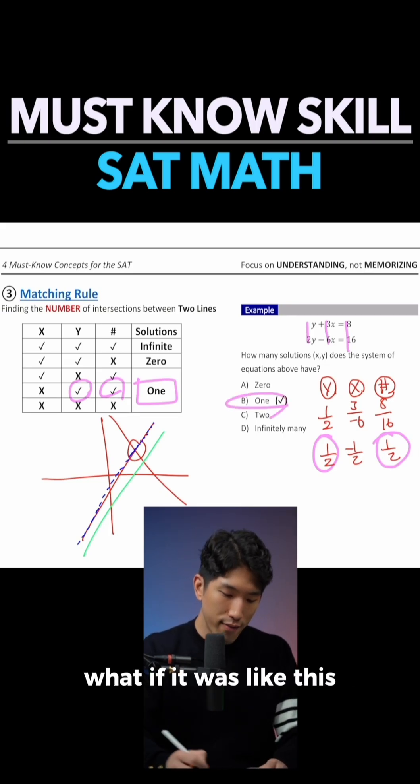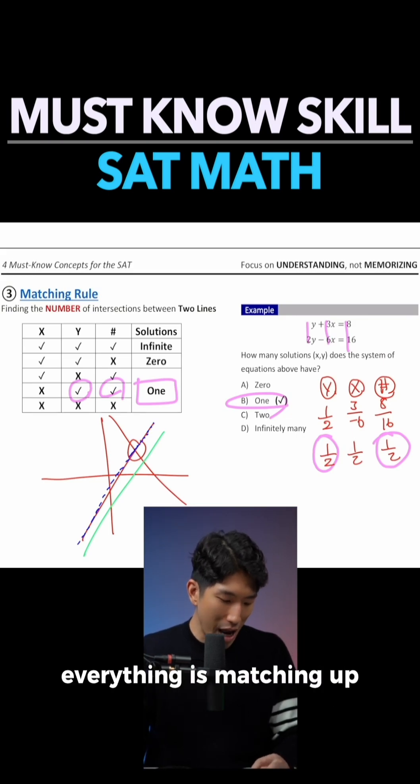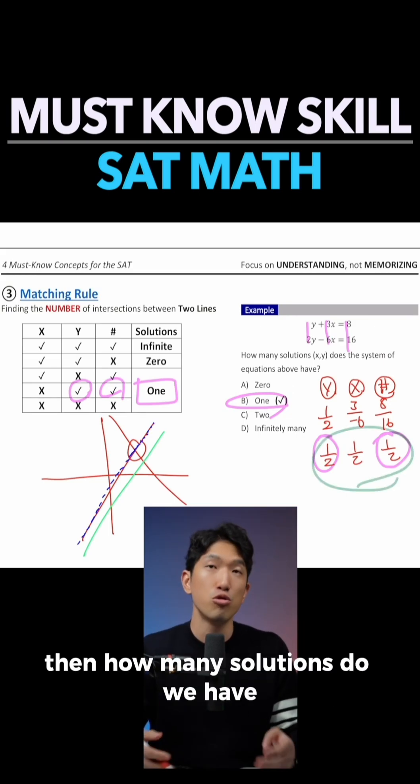You might be asking, what if it was like this? What if it was one half, one half, one half - everything is matching up? Then how many solutions do we have?